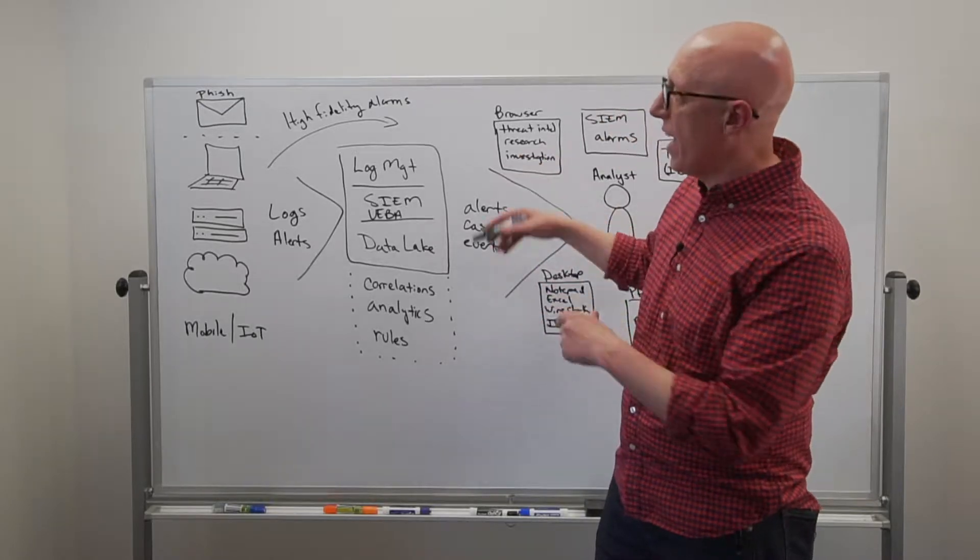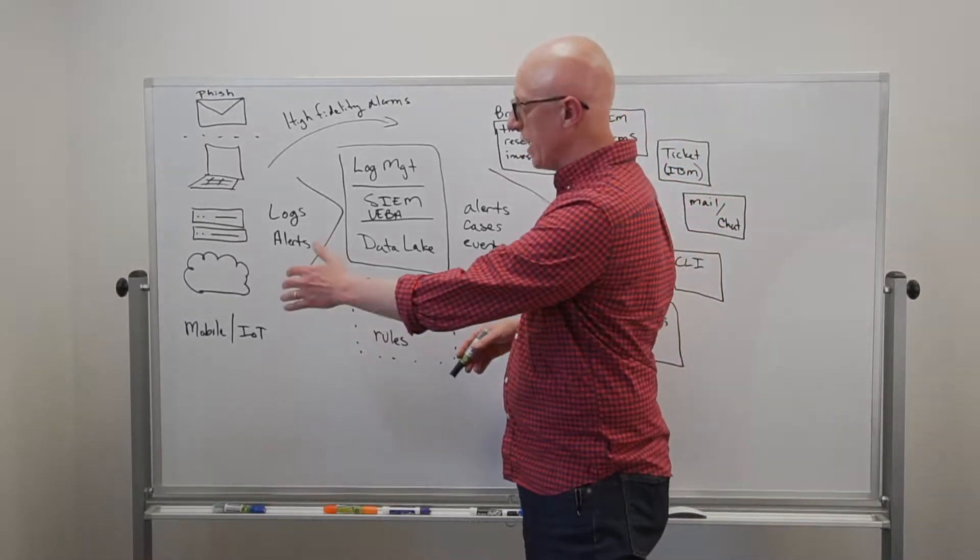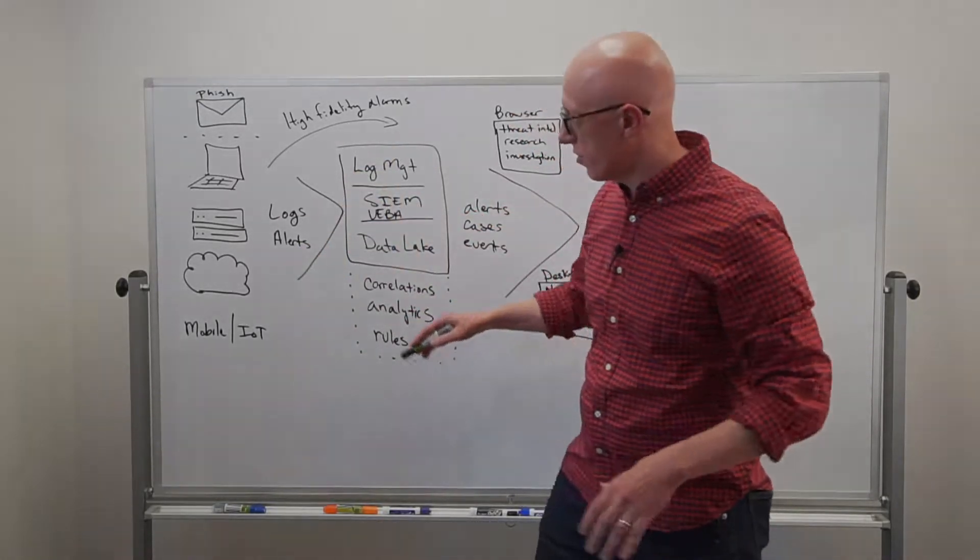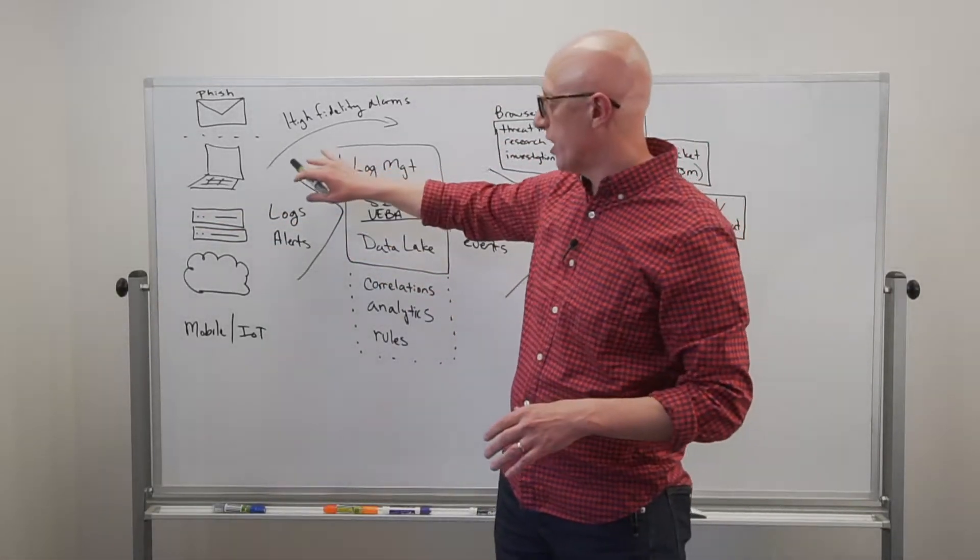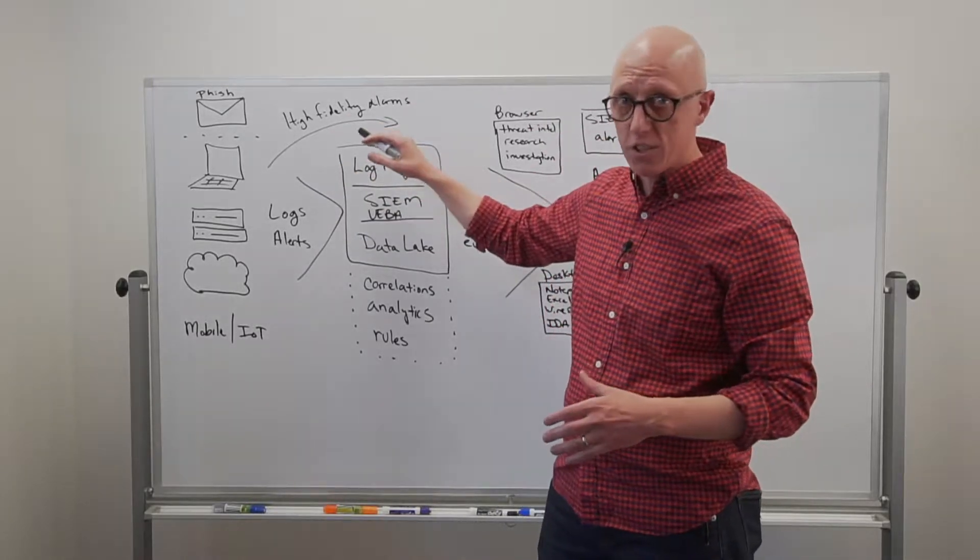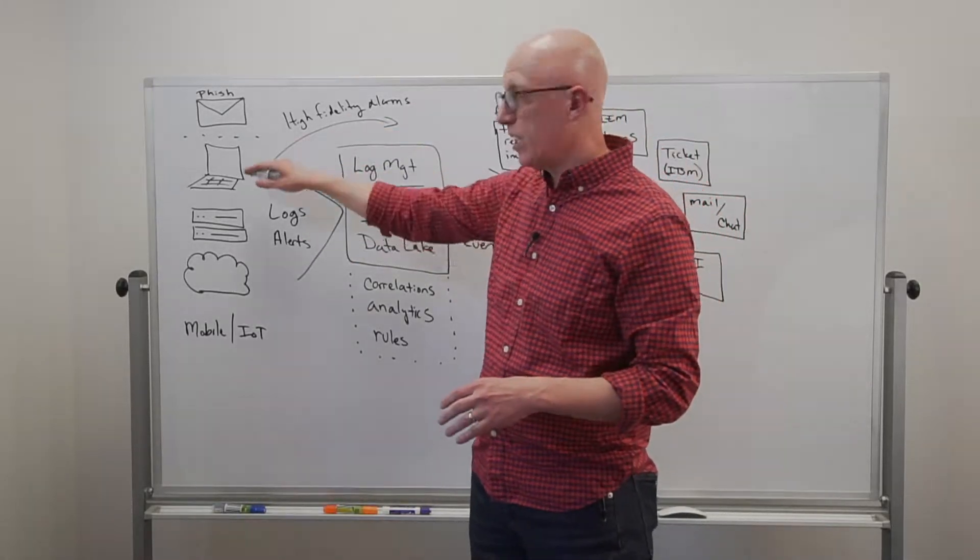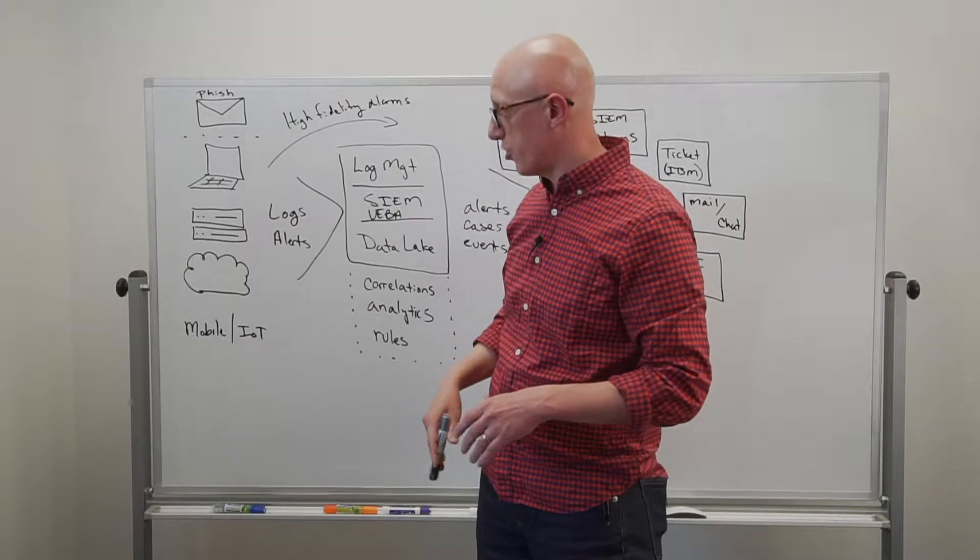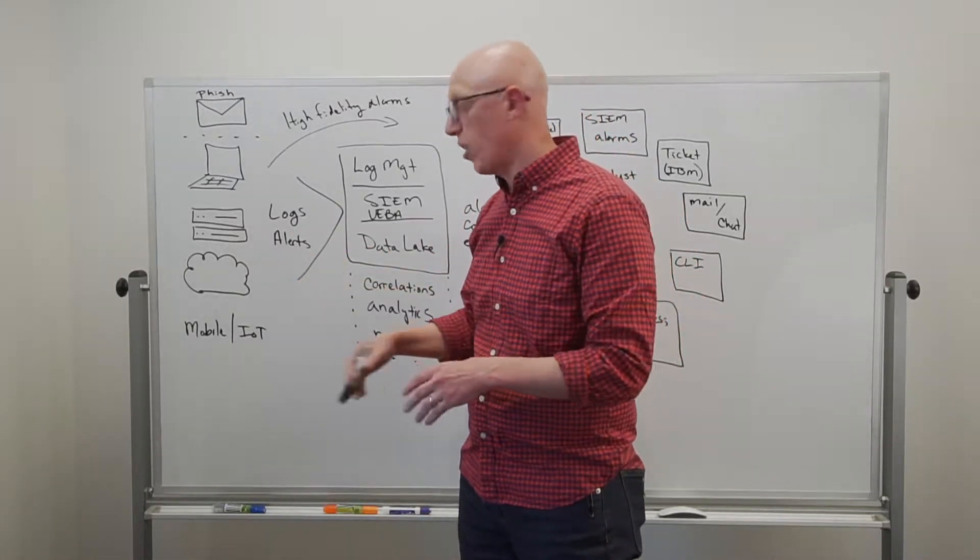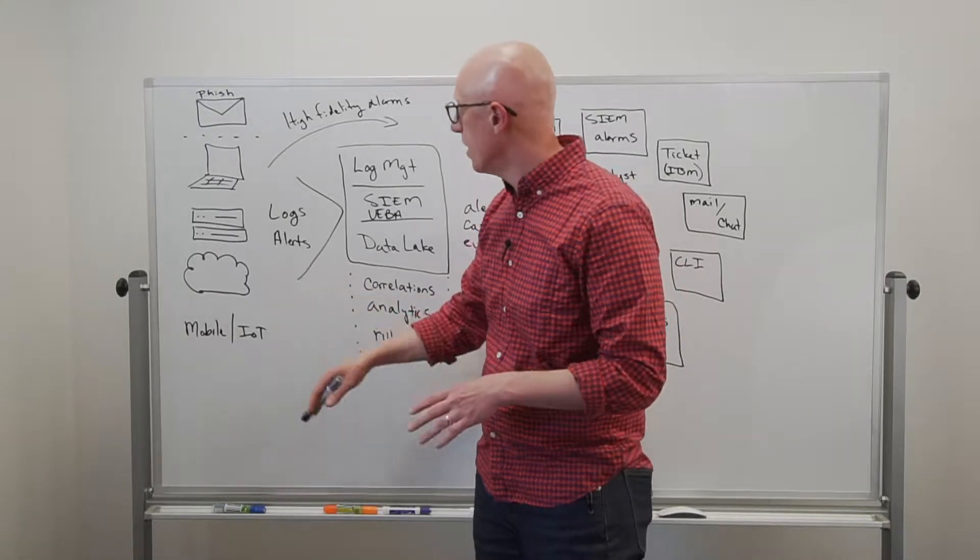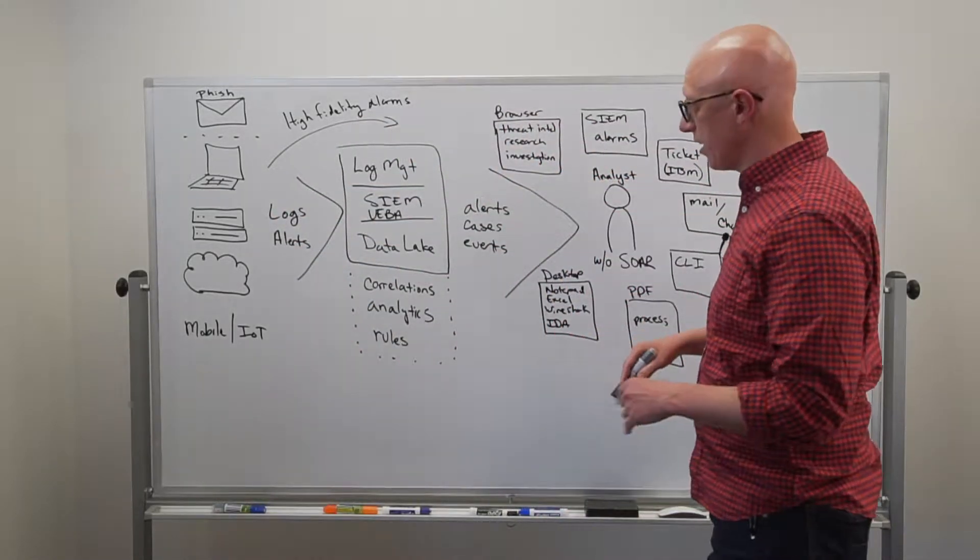On top of that, organizations are also getting those high fidelity alarms. Those downstream technologies sending log information into the SIM can also generate really good alarms that are easy to action directly. That might be your highly trusted endpoint technology, or maybe you have really good luck from a low false positive rate perspective on your perimeter defenses. Whatever it might be, those alarms are flowing to your security team.